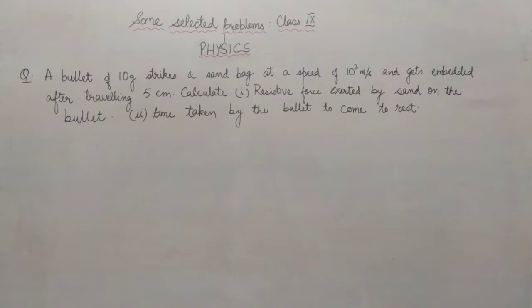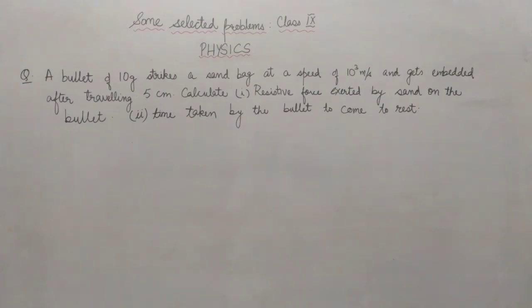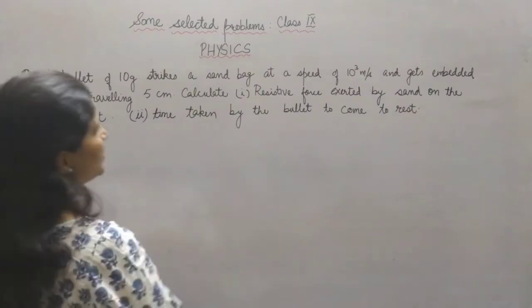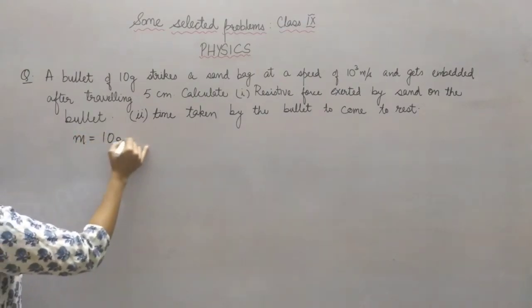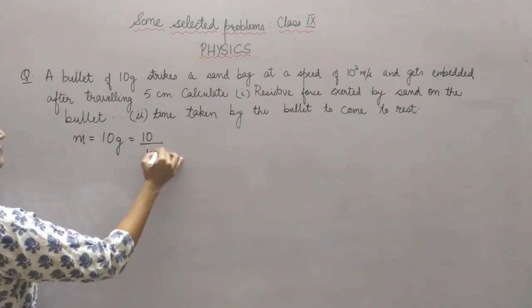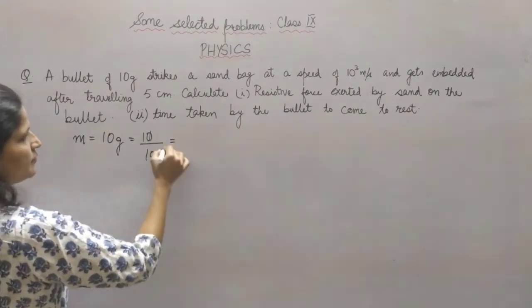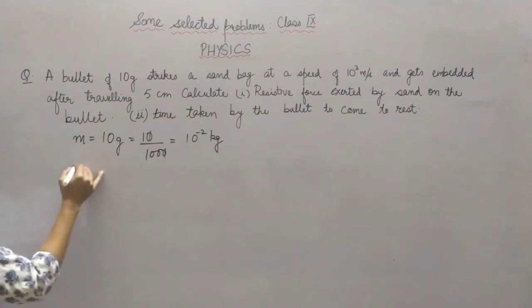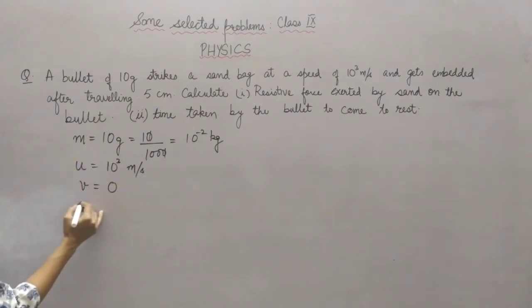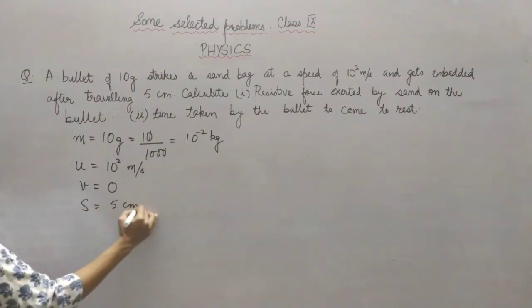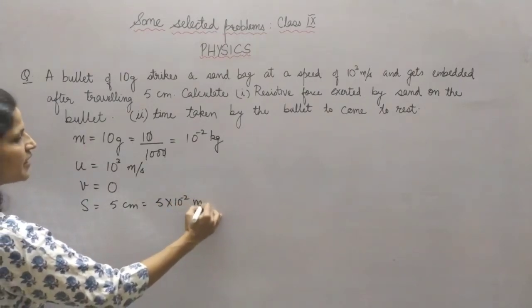Let's take another example. A bullet of 10 grams strikes a sandbag at a speed of 10³ meter per second and gets embedded after traveling 5 centimeters. Calculate the resistive force exerted by the sand on the bullet and the time taken by the bullet to come to rest. Given values: mass of bullet m = 10 g = 10⁻² kg; initial velocity U = 10³ m/s; final velocity V = 0; distance S = 5 cm = 5 × 10⁻² meters.